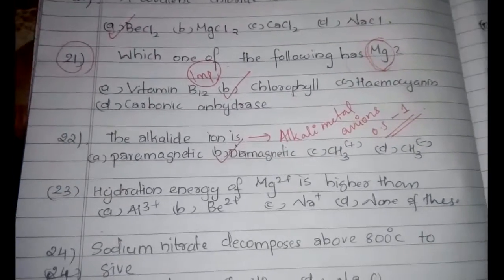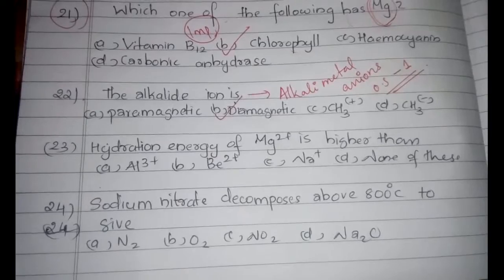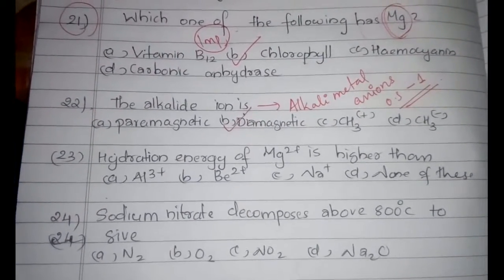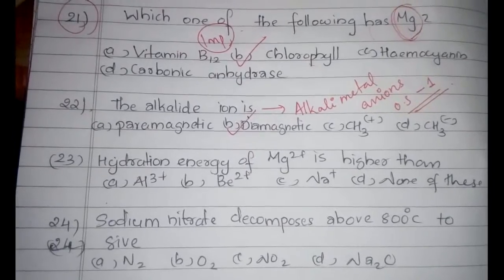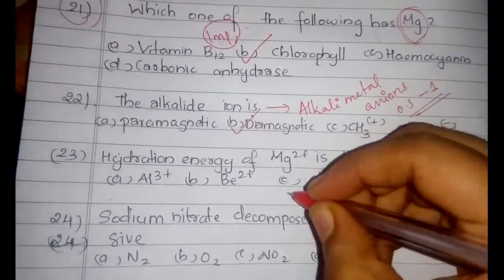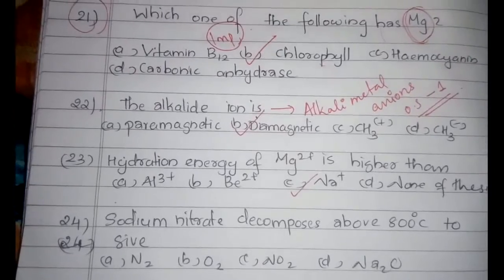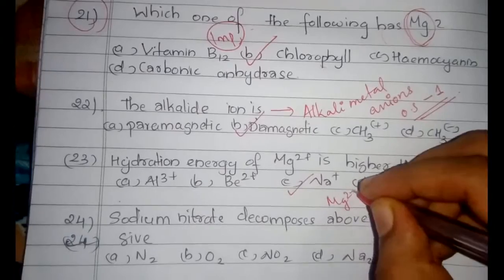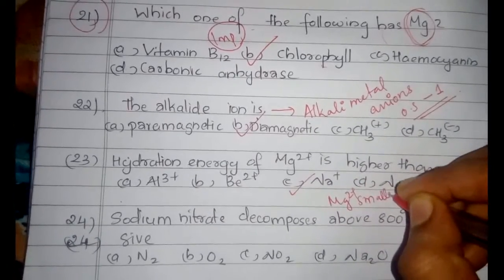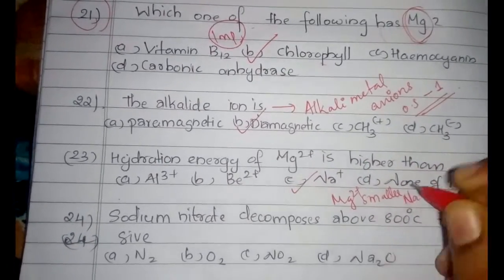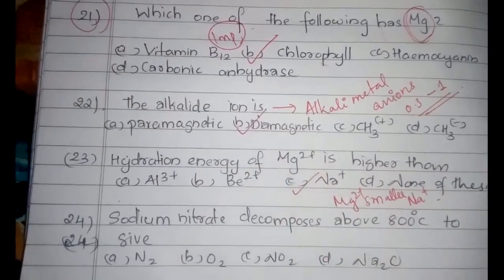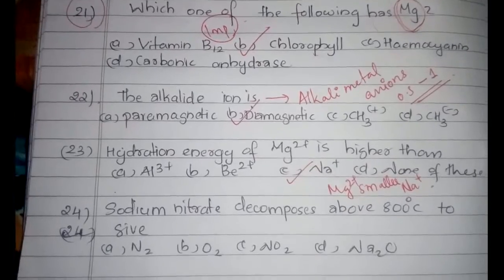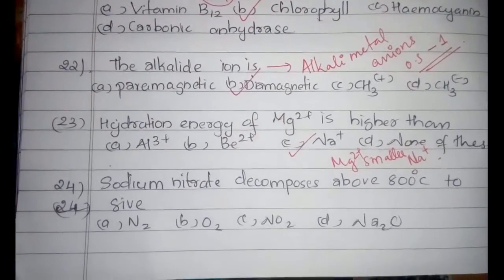The 23rd question: hydration energy of Mg²⁺ is higher than which of the following? The answer is Na⁺. Mg²⁺ is smaller than Na⁺, and therefore it has higher hydration energy.